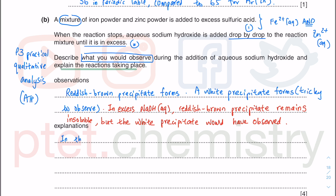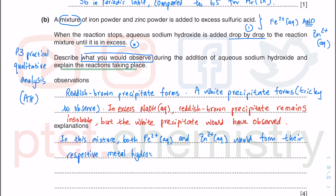In this mixture, both the iron 2 plus aqueous and the zinc 2 plus aqueous would form their respective metal hydroxides. Metal hydroxides are mostly insoluble; they come out as precipitates in a precipitation reaction. This gives Fe(OH)₂ solid, which is a reddish-brown precipitate, and Zn(OH)₂, which is a white precipitate.